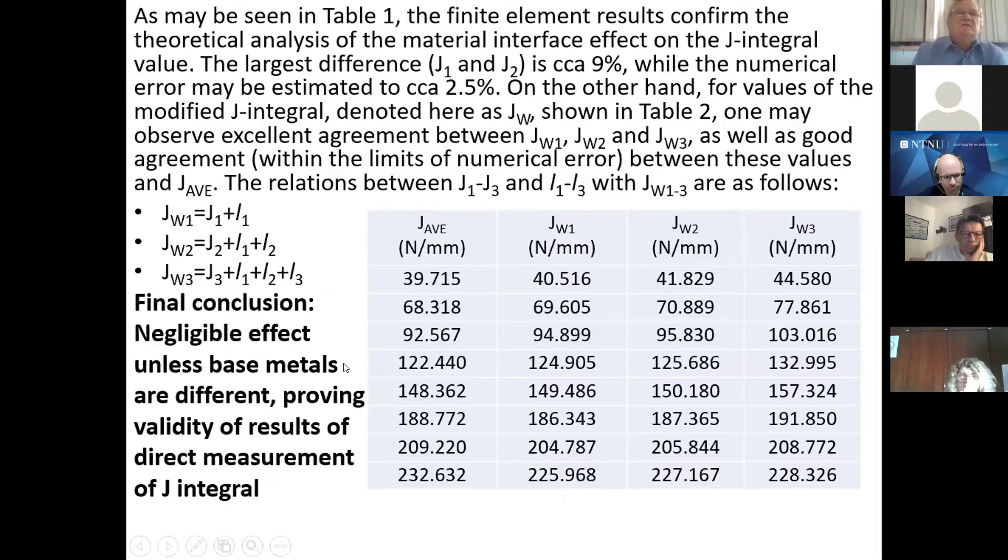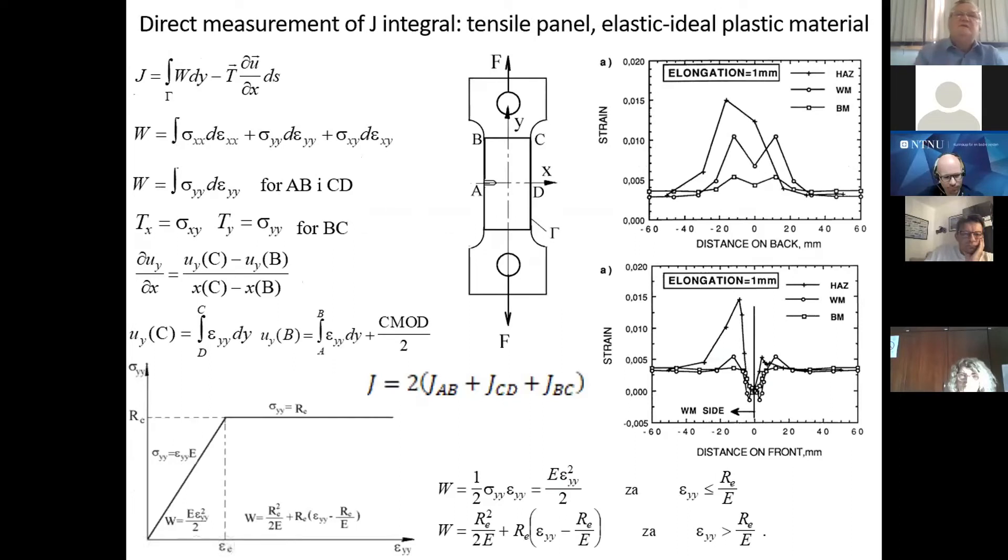But then again, once we summarized all our results, we came to the final conclusion that the effect is negligible unless base metals are different. So if we have maybe combination ferrite to austenite, then in that case, we really have to take it into account. But in this case, we actually proved the validity of results of experimental direct measurement of J-integral. And this is how it is done.